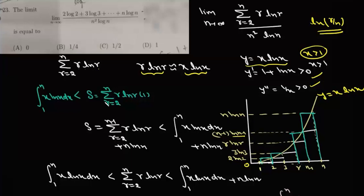Coming back to our series — summation r from 2 to n of r·logr — we take this as r·logr multiplied by 1, where 1 is the width of the interval, so we are talking about areas of rectangles. The rectangle at n has height n·logn, at n−1 has height (n−1)·log(n−1), and at 2 has height 2·log2. This sum S will be greater than the area under the curve from 1 to n, so S is greater than the integral from 1 to n of x·logx dx.